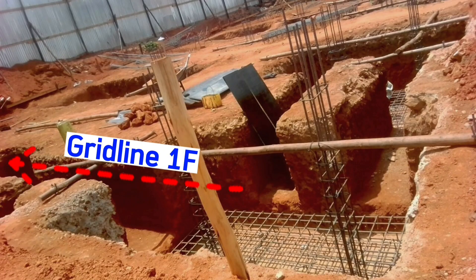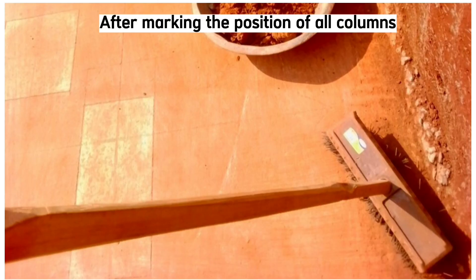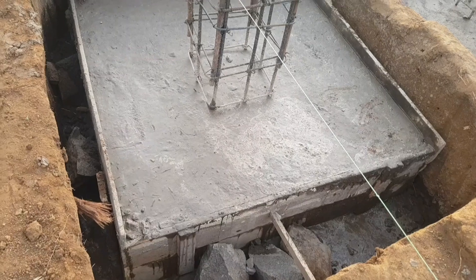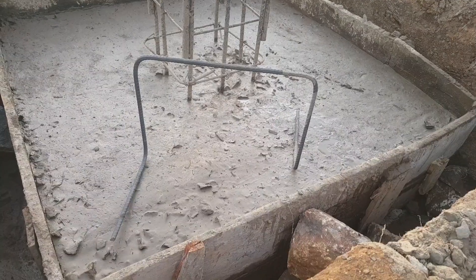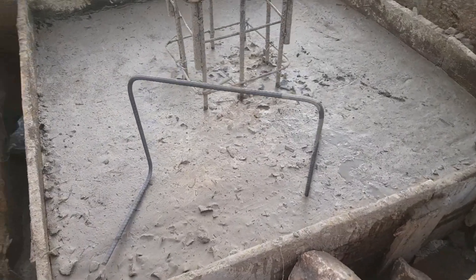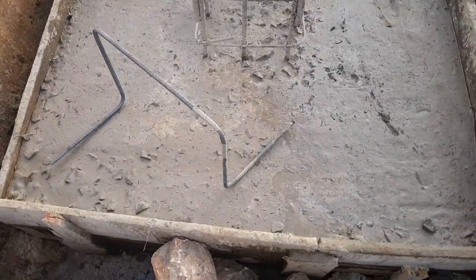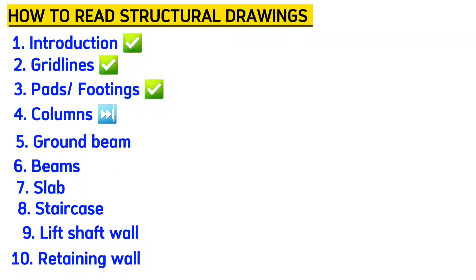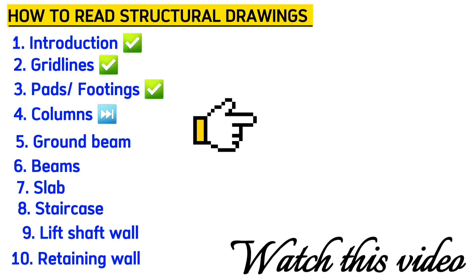After marking the position for all columns, then place steel and cast the concrete for these pads together with the stub columns. That's the end of this video about how to read the structure drawing for the pad foundation or footing. I hope you get something from it. Let's watch this next video about how to read the structure drawing for columns.